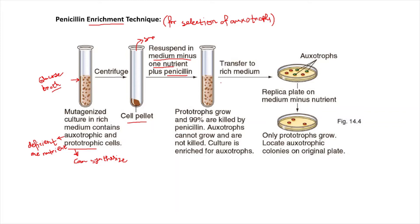In this new medium, prototrophs can grow, and once they grow, 99% of them are killed by penicillin. Because this medium lacks one particular essential nutrient that auxotrophs are also lacking, auxotrophs will not be able to grow and hence they are not killed. After a substantial amount of time, almost all the prototrophs will be killed and the medium will be enriched with auxotrophs — the medium will only contain auxotrophs.